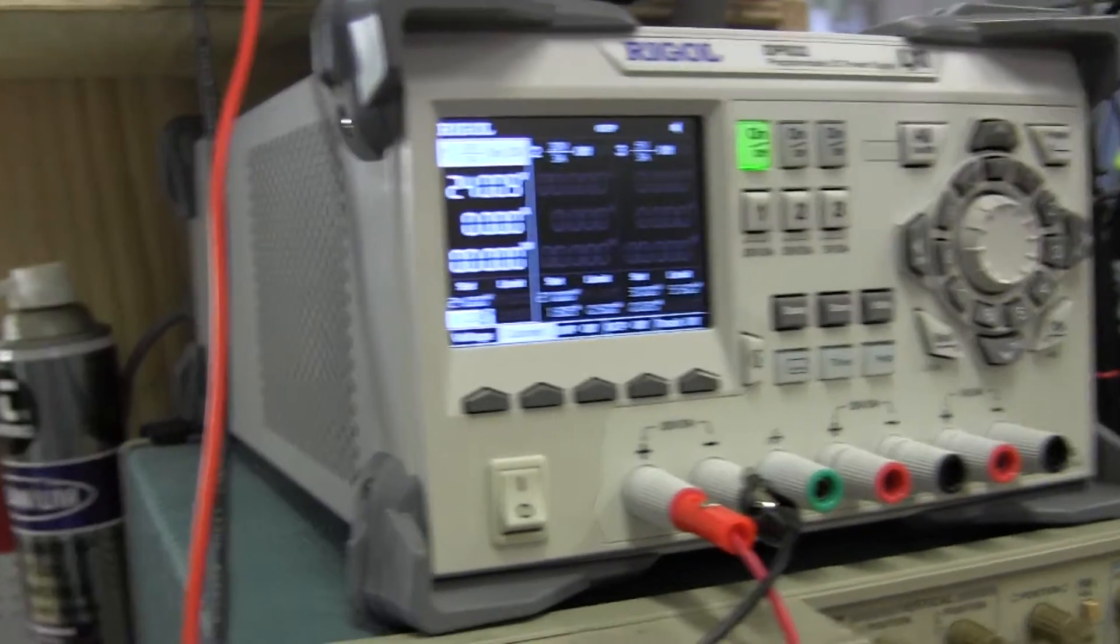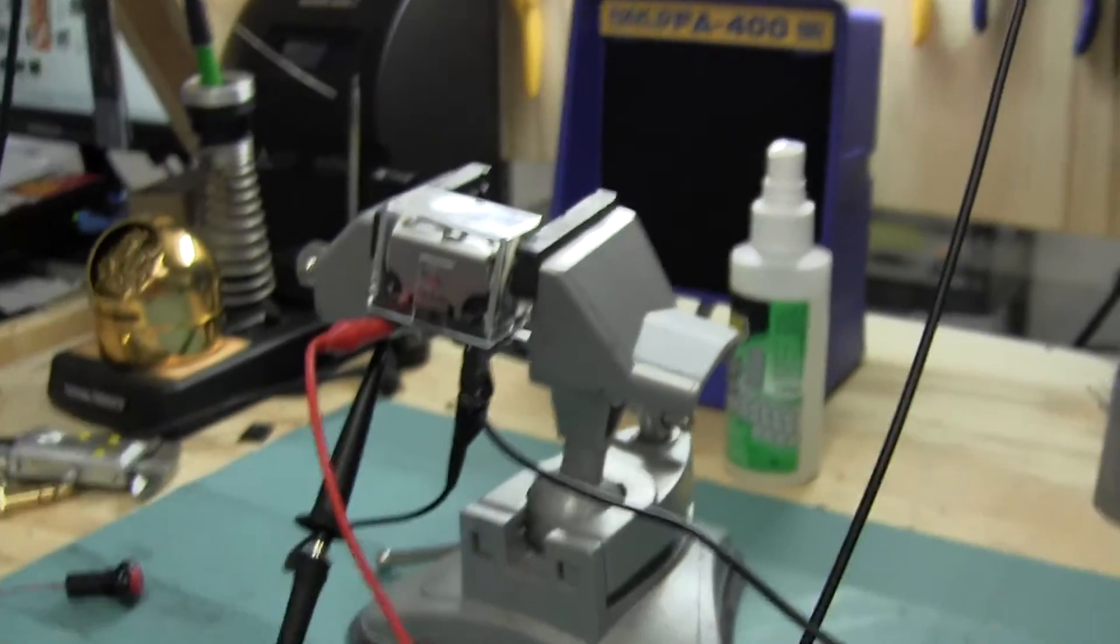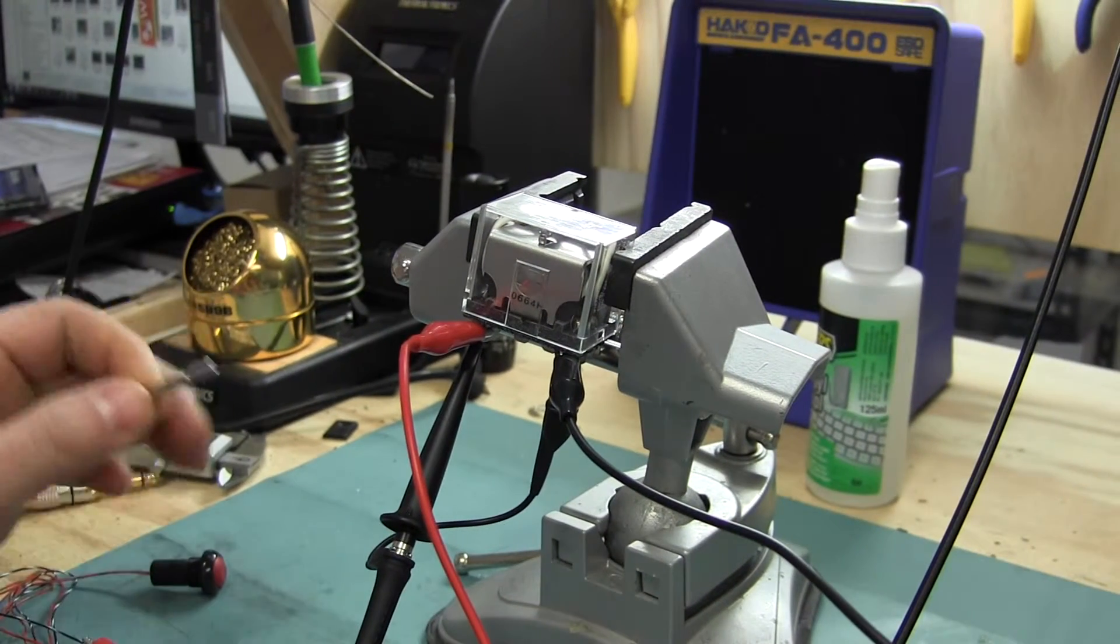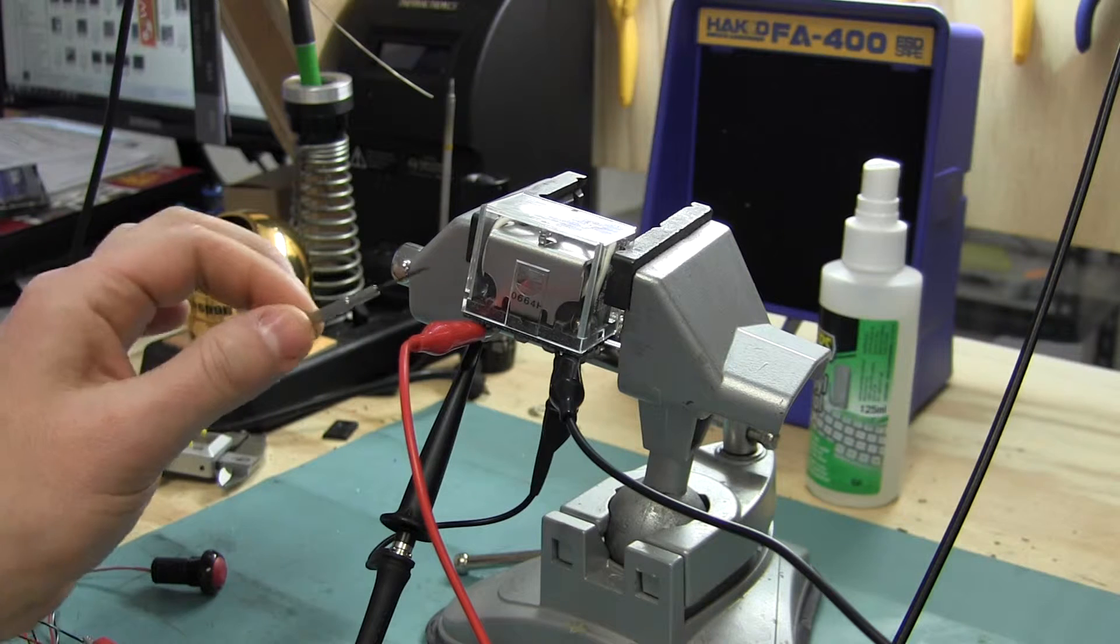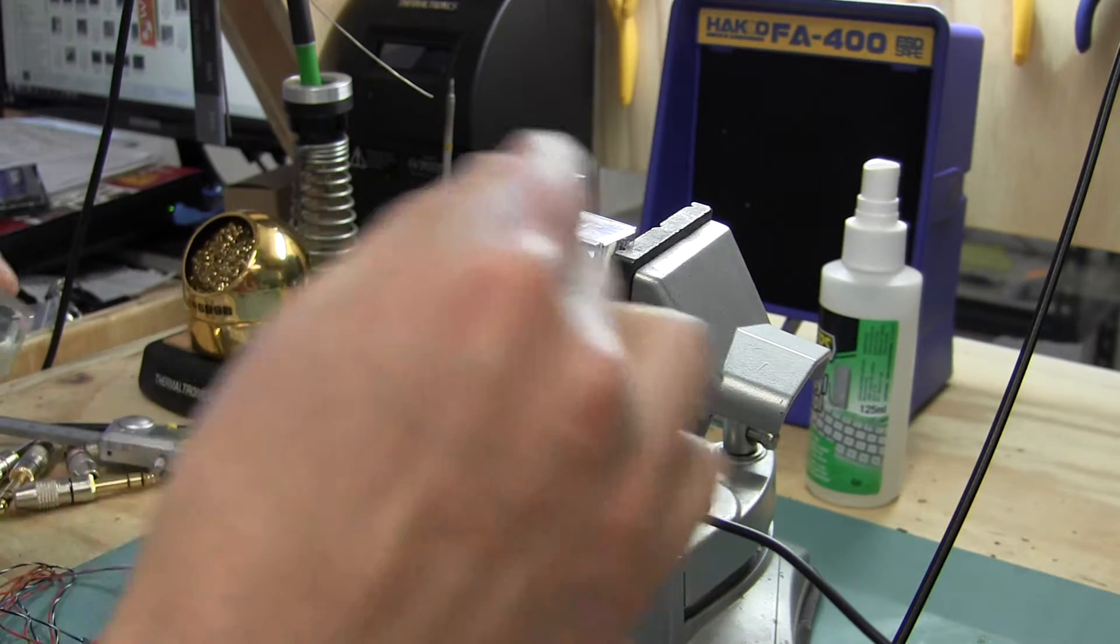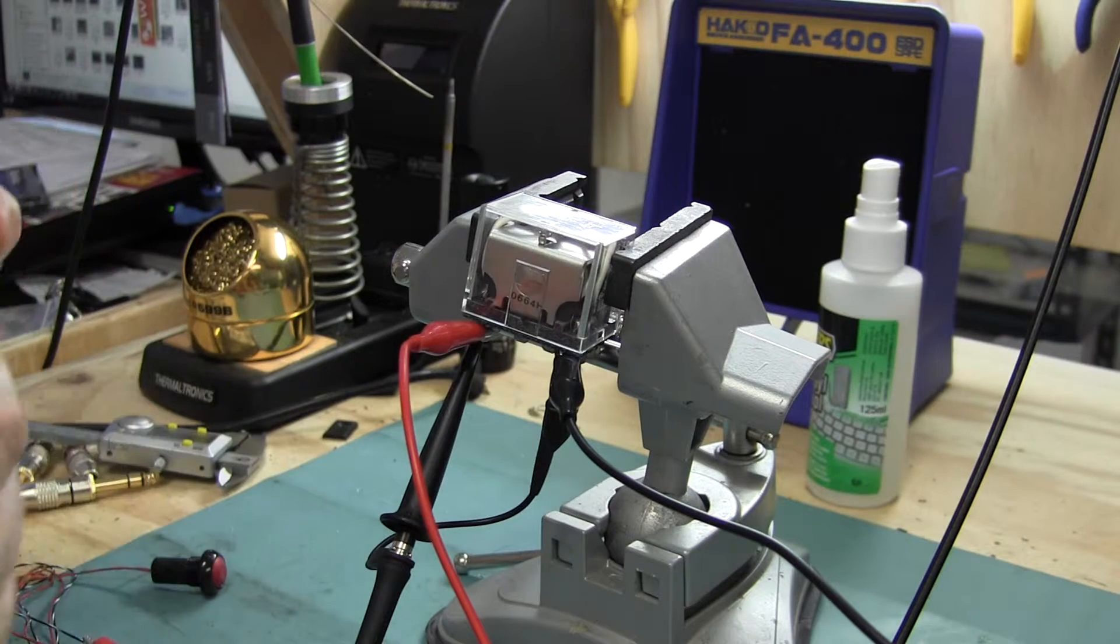What we've got is the power supply going to the relay itself. Let me get something to point with. We've got power coming in on pin 14, going through the coil to pin 13. Essentially, it's just passing through pins 14 and 13.